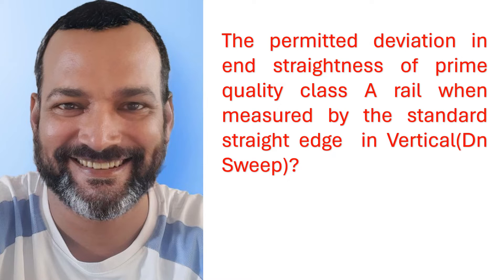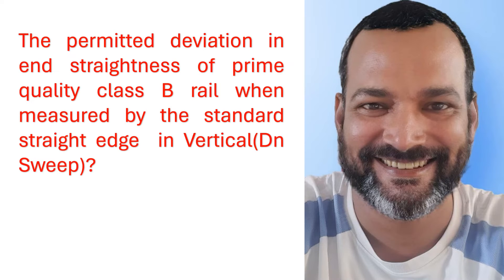The permitted deviation in end straightness of prime quality Class A rail when measured by the standard straight edge in vertical downswipe is 0 millimeter. The permitted deviation in end straightness of prime quality Class B rail when measured by the standard straight edge in vertical downswipe is also 0 millimeter.